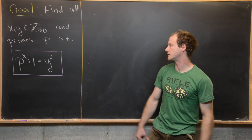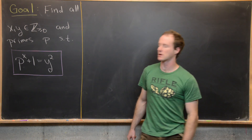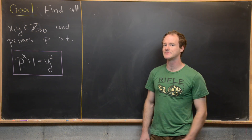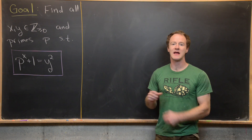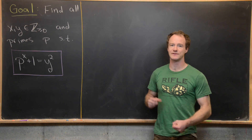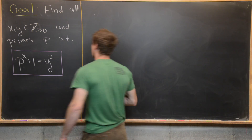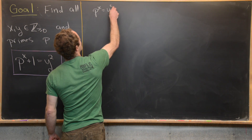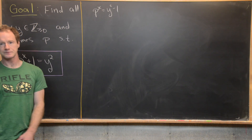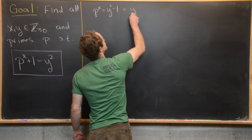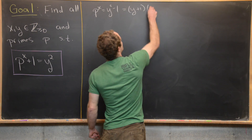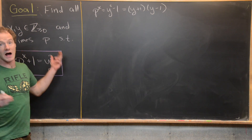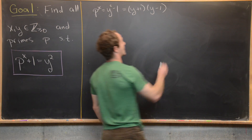Now let's jump into the solution. The fact that we have y squared on one side of the equation and plus one on the other side really screams at us to move that one over and factor this thing like a difference of squares. So we're going to write p to the x equals y squared minus one, and then factor the right-hand side to y plus one times y minus one.